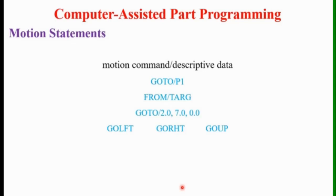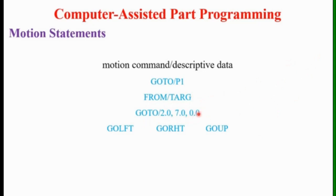In motion statements, they are generally written in the format: motion command and descriptive data. For example, GOTO / P1 means move to point P1. FROM / term means move from a target point. Another example: GOTO / 2.0, 7.0, 0.0 — specifying x, y, and z coordinates of the destination point. Motion commands also include GOLFT (go left), GORGT (go right), GOUP (go up), GODOWN (go down), GOFWD (go front), GOBACK (go back).